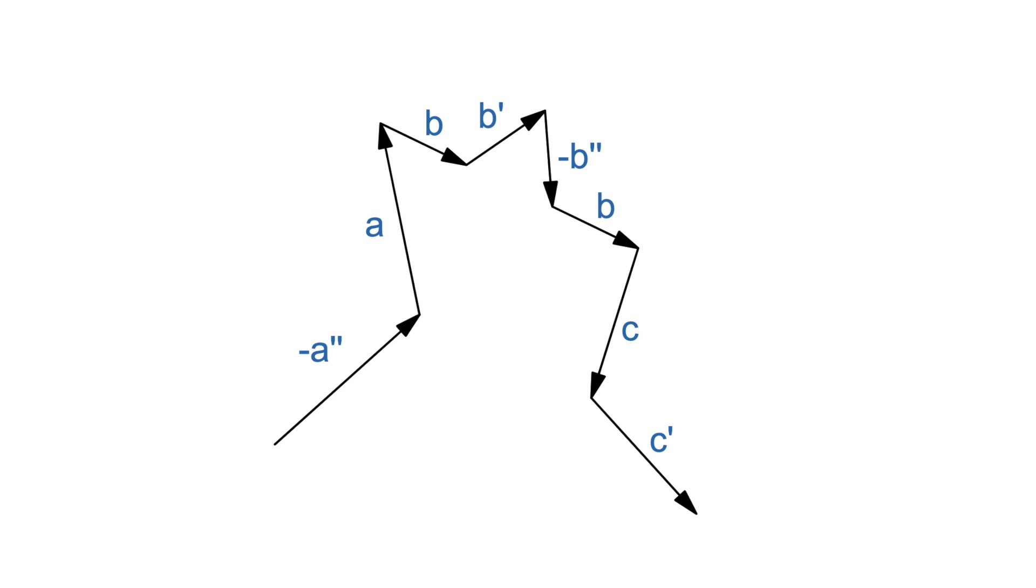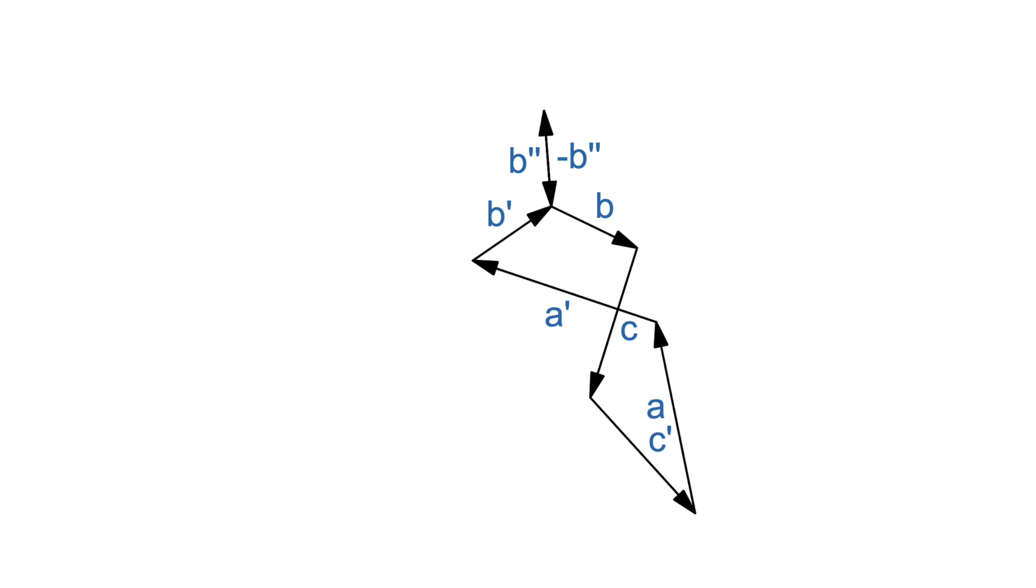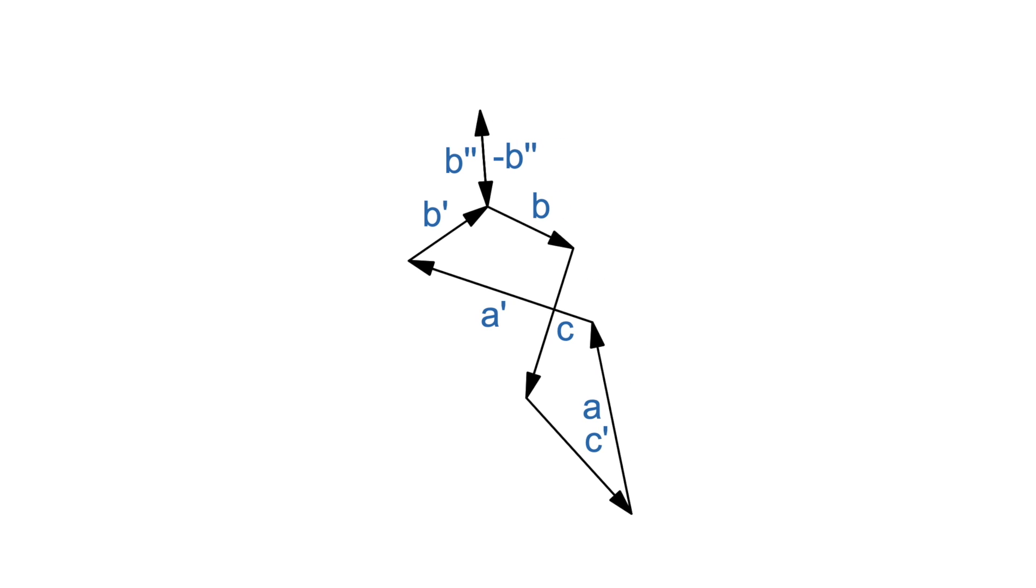Following the recipe we discussed earlier, we'll rotate the first one 60 degrees counterclockwise, which adds a prime to each of the constituent vectors. Notice that this one is now negative a triple prime, which is the same as a. So, if we can show that these two vector sums added together will always result in zero, that would prove they started as two sides of an equilateral triangle.